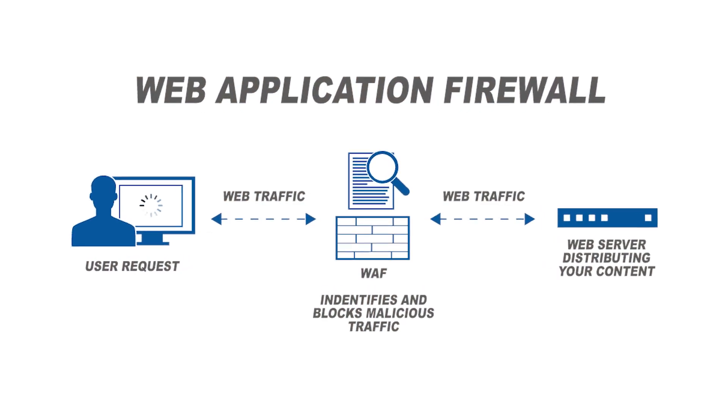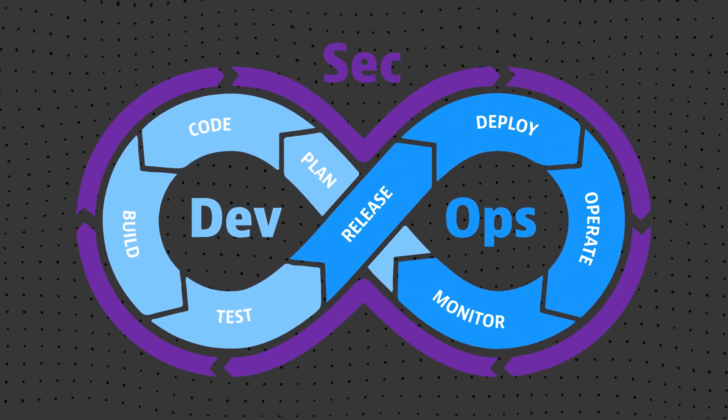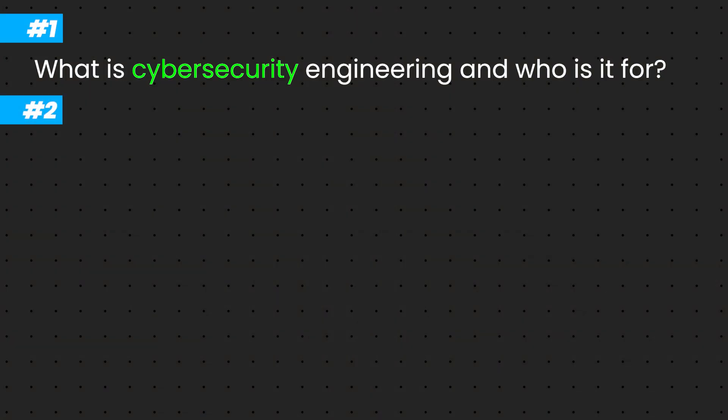What I love about security engineering is that we're always thinking ahead. For example, if a customer wants a web application firewall (WAF) solution, we have to deploy a highly available system that not only meets their current needs but also scales for the next five or even ten years. To sum it all up, security engineers come in, design, deploy, and maintain security solutions, systems, and products. We also focus on making operations smoother by automating tasks and assisting with the software development life cycle through DevSecOps.